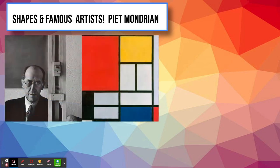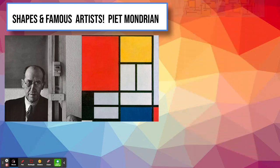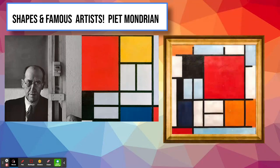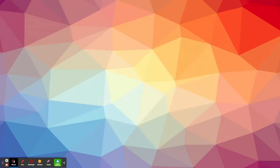Piet Mondrian, a Dutch painter, was famous for creating abstract paintings made from squares and rectangles. Interestingly, he started out painting very realistic trees and other scenes before simplifying — he changed to simplifying everyday objects into basic geometric shapes. You don't get any more simple than that.